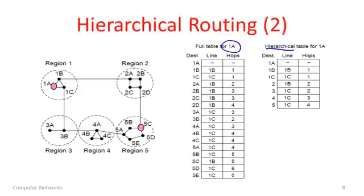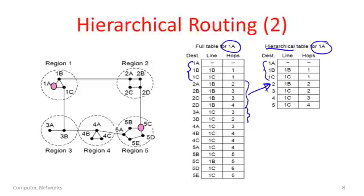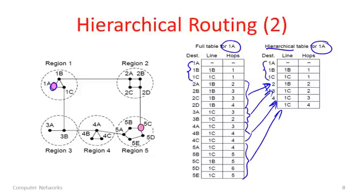On the right I have the hierarchical table for 1A. In this table, it has the same detailed entries for nodes within region 1 — that's 1A, 1B, and 1C. However, the other entries have been collapsed. The full table had 4 entries for region 2, and that's collapsed into a single entry — we just need to know which way to go to get to region 2. Similarly, region 3 has been collapsed into a single entry, and region 4, and region 5. My arrows are a little off there, but you get the idea. So we now have a much smaller table, and we can also use it to route.